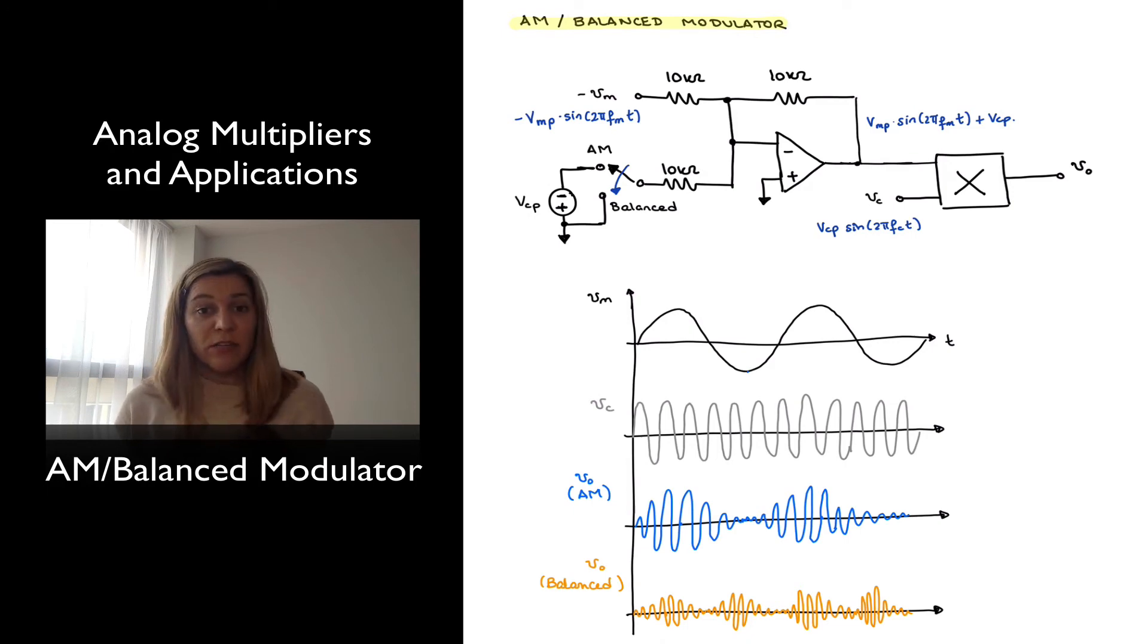I've tried to provide a graphical representation of what the signals look like under the different circumstances. So the first signal there, the slow varying sinusoid, is my modulating signal, my information signal.